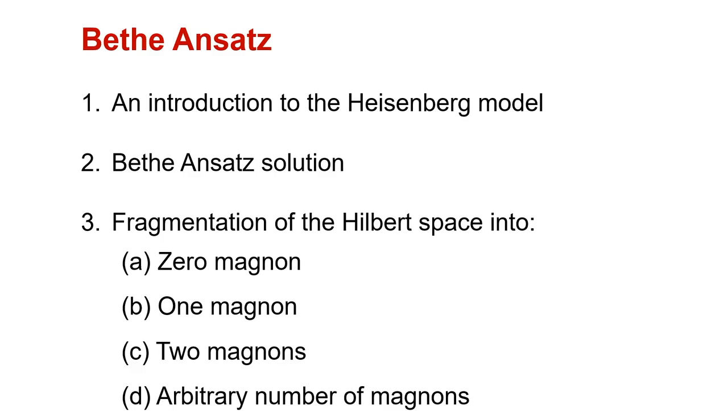We shall be doing Bethe Ansatz today. It is a technique, rather an exact technique, to solve a variety of problems. We will only talk about the Heisenberg model — the solution of the Heisenberg model. We will give a short introduction to the Heisenberg model and then proceed with the Bethe Ansatz solution, which consists of the following steps: fragmentation of the Hilbert space into the zero magnon sector, one magnon sector, two magnon sector, and arbitrary number of magnons.